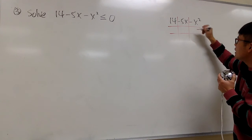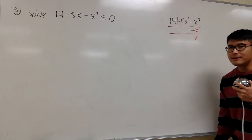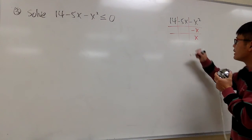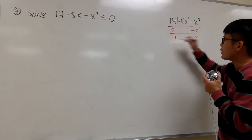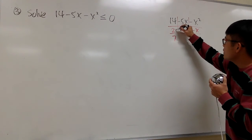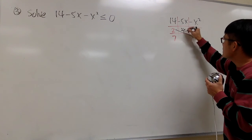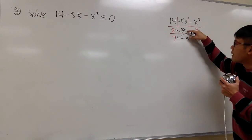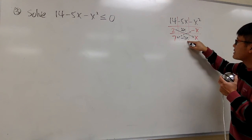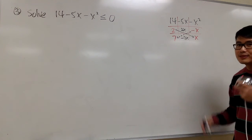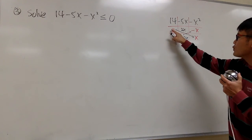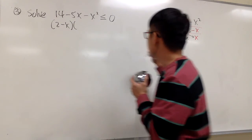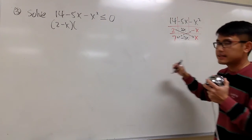To get negative x squared, I need to have negative x and positive x. And then to get 14, I know 2 times 7 is 14, so let me put down 2 here and 7 here. How do I know if this is right? Well, 2 times x is 2x, negative x times 7 gives me negative 7x. When we combine 2x and negative 7x, we do get negative 5x. So we get our factors: the first one is 2 minus x, and the second one is 7 plus x.